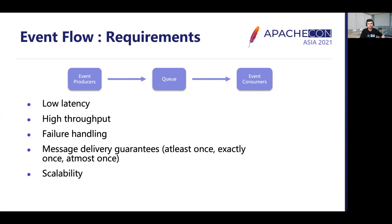Message delivery guarantees are also needed. These are of three types: at-least-once, exactly-once, and at-most-once — exactly-once being the most difficult to achieve. Scalability is also one of the key requirements at very high scale to handle very high volumes of data.